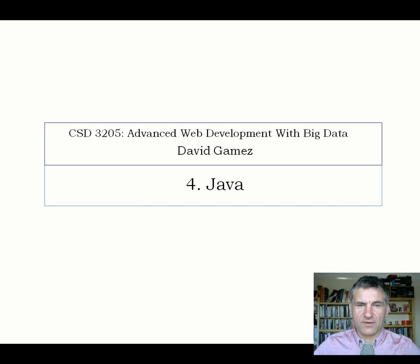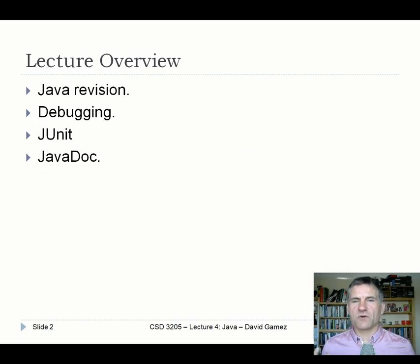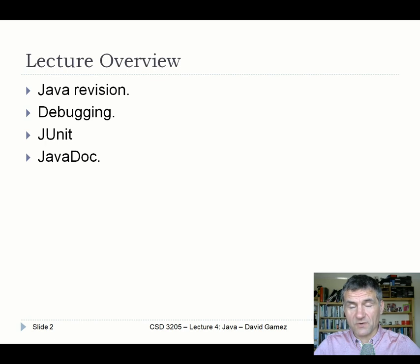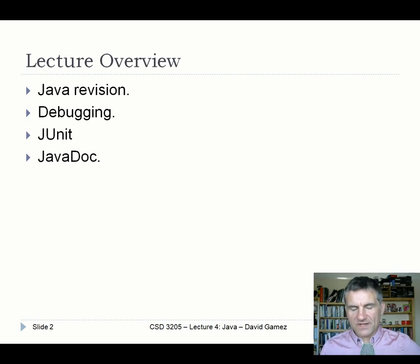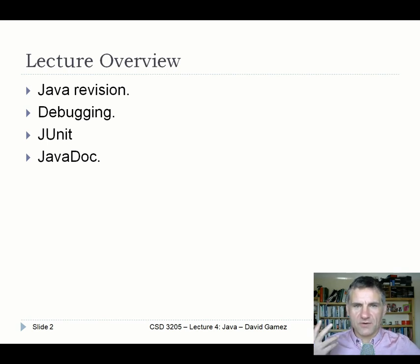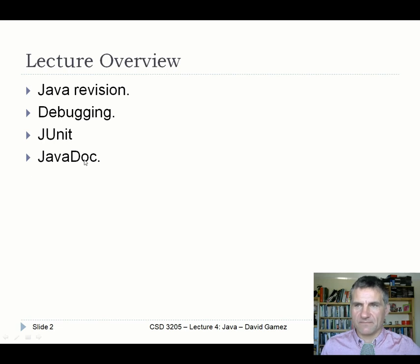Welcome to the fourth lecture in CSD 3205. In this lecture I'm going to cover Java. I'll start by making sure we're all on the same page when it comes to developing Java applications. I'll briefly show you how to use a debugger with Java, which will save you quite a bit of time and effort. Then I'll show you how to unit test your Java code using JUnit, and finally how to use Javadoc to generate API documentation. A couple of these things have marks attached to them.